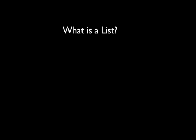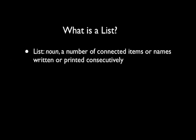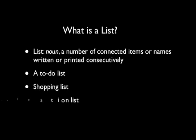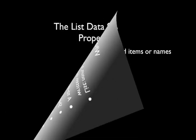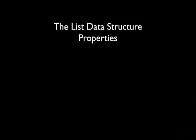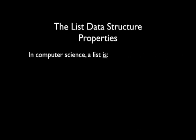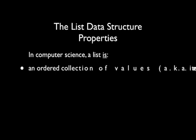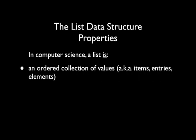Let's start with a simple question: what is a list? The dictionary defines it as a number of connected items or names written or printed consecutively. We use lists every day — to-do lists, shopping lists, invitation lists. You get the point. Okay, that was the English definition, so what is a list in computer science?